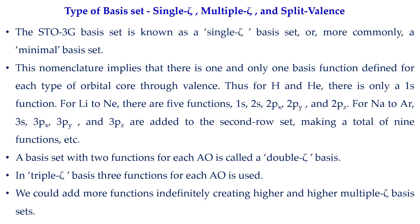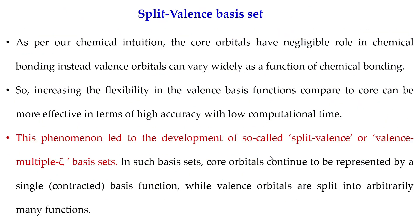A basis set with two basis functions for each atomic orbital is called a double zeta basis set. Similarly, in a triple zeta basis set, three basis functions are used for each atomic orbital. You can use more and more basis functions per orbital, defining a multiple zeta basis set. The calculations will be more accurate, but the computational time will be higher.